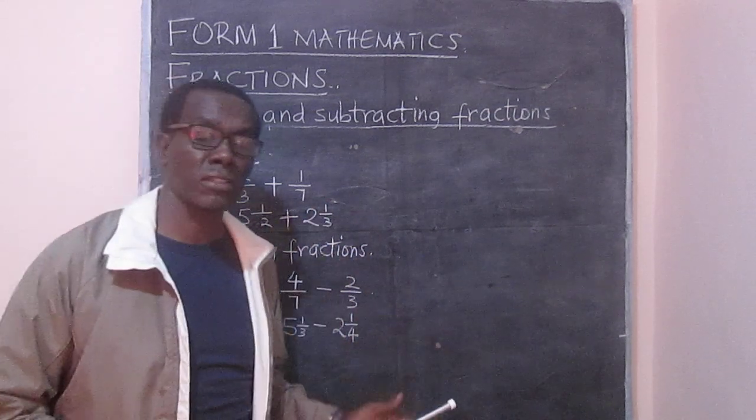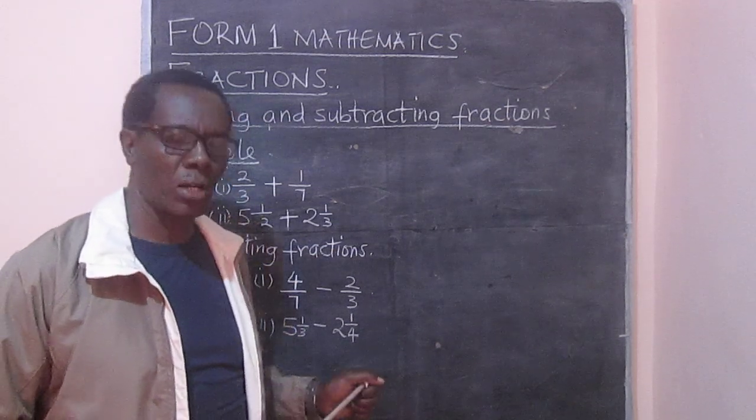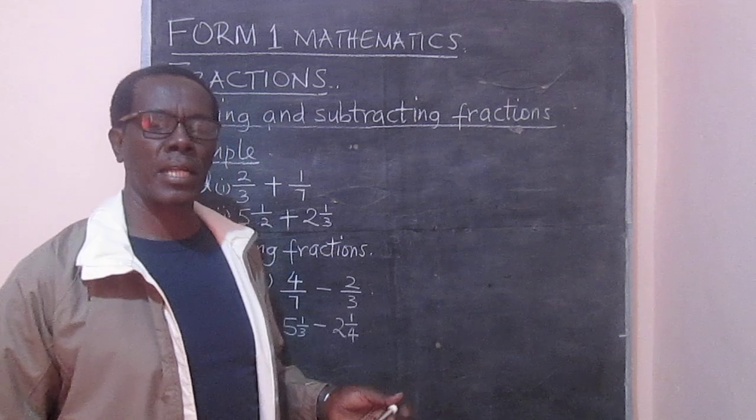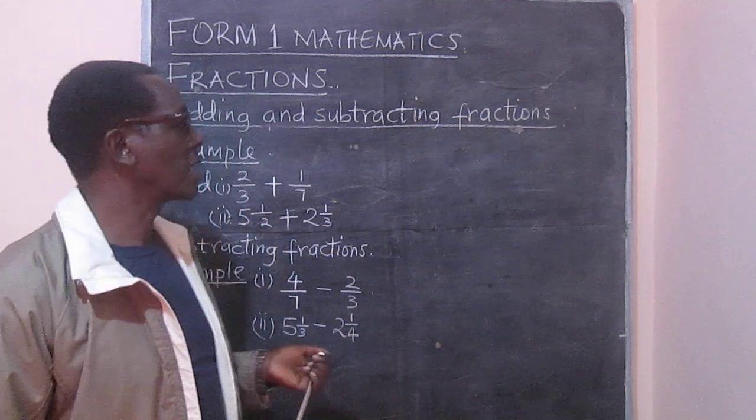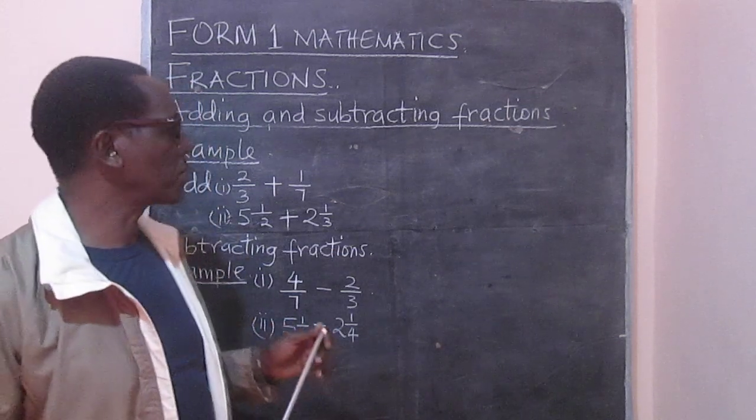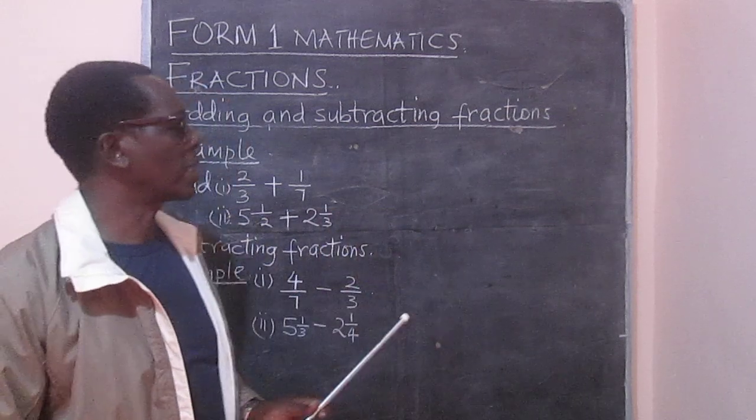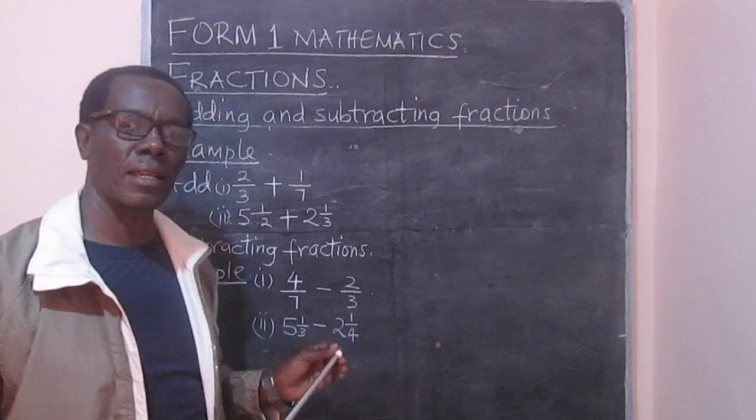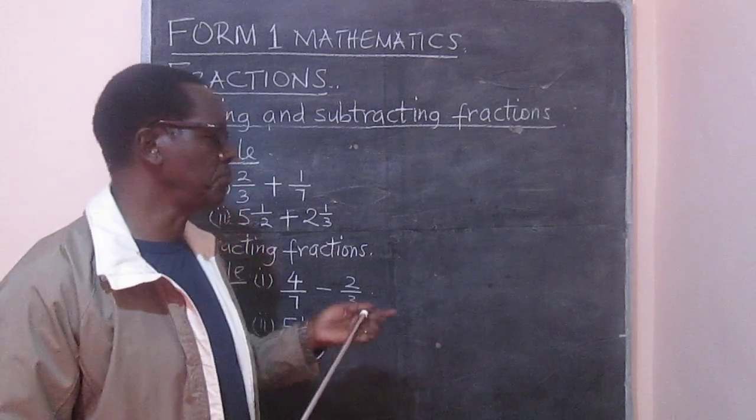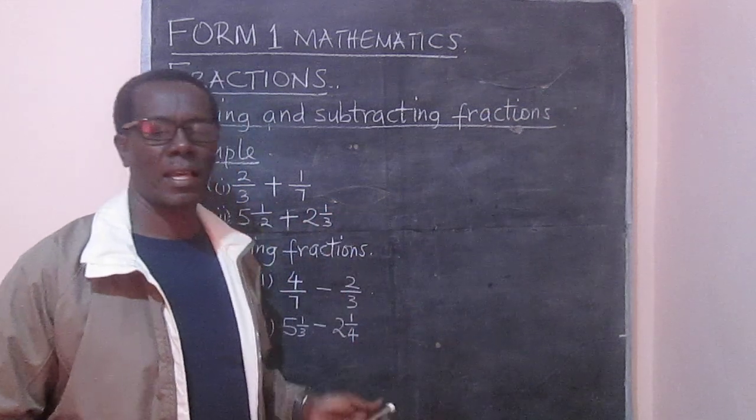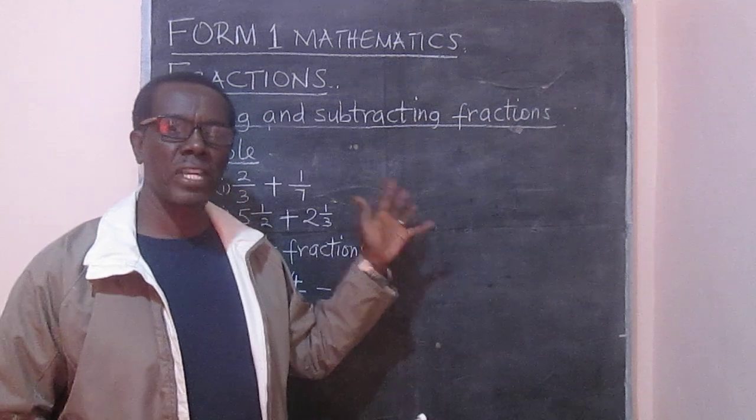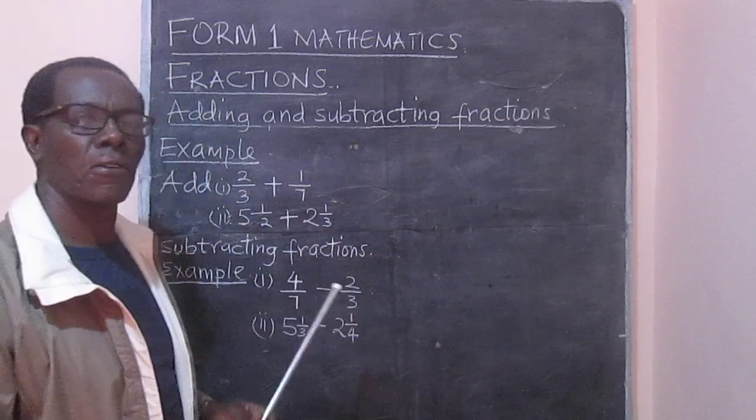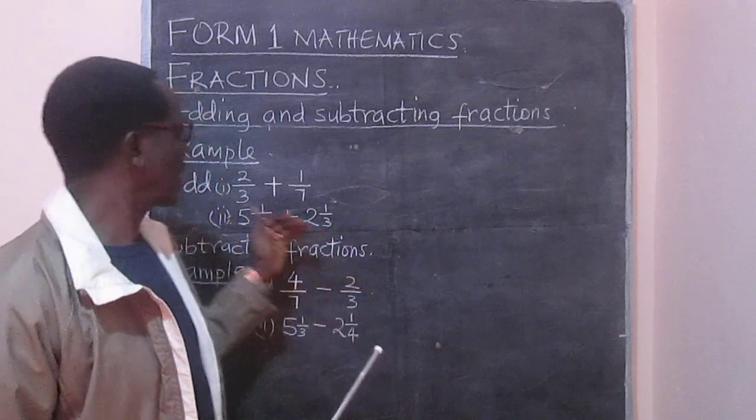So when we are simplifying fractions, all we need is the knowledge of integers, because we will add negative numbers, we will add positive numbers, we will subtract, we will multiply, and we are going even to divide. In our lesson today, we want to look at how we can add and subtract fractions. This topic in Form 1 is actually a revision of what was done in primary school. So it is not expected that this topic is going to be difficult. But again, a good understanding of this topic gives the learner a very good background for progression to more involving topics.